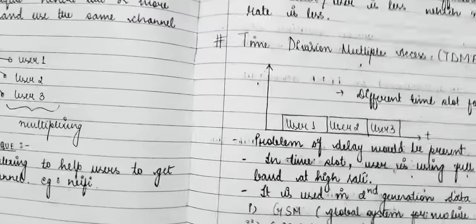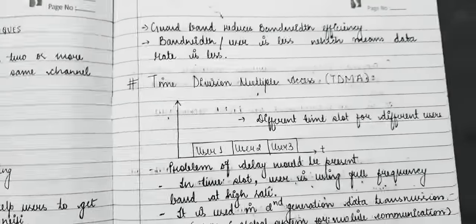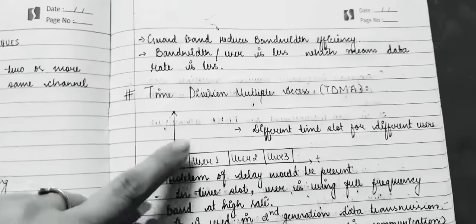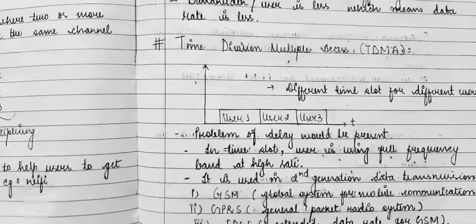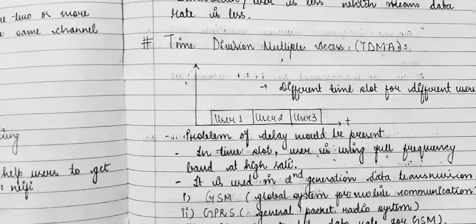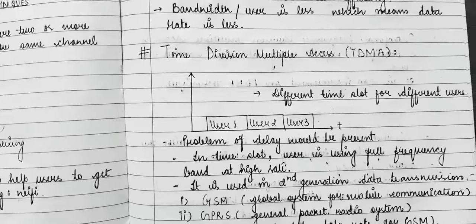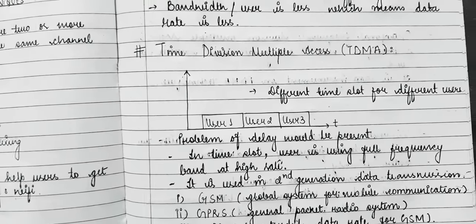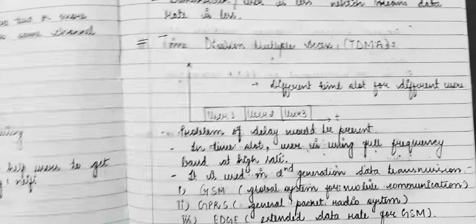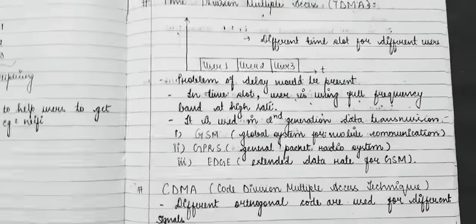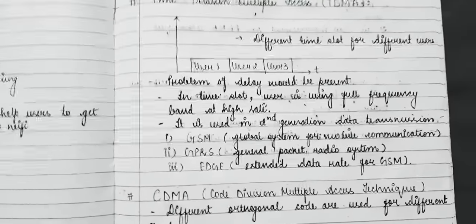In TDMA there will be a problem of delay. In each time slot, the user uses the full frequency band at high rate. This is a technique of the 2G generation — for example, GSM (Global System for Mobile Communication), GPRS (General Packet Radio Service), and EDGE (Extended Data Rate for GSM).